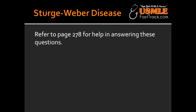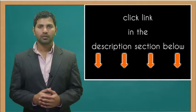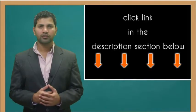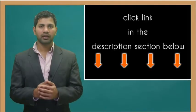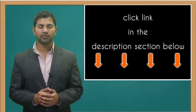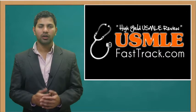These patients would also have seizures as well as early onset of glaucoma. One thing to note about Sturge-Weber Disease is that it affects small vessels. For more information on this topic, click on the link in the description section below.